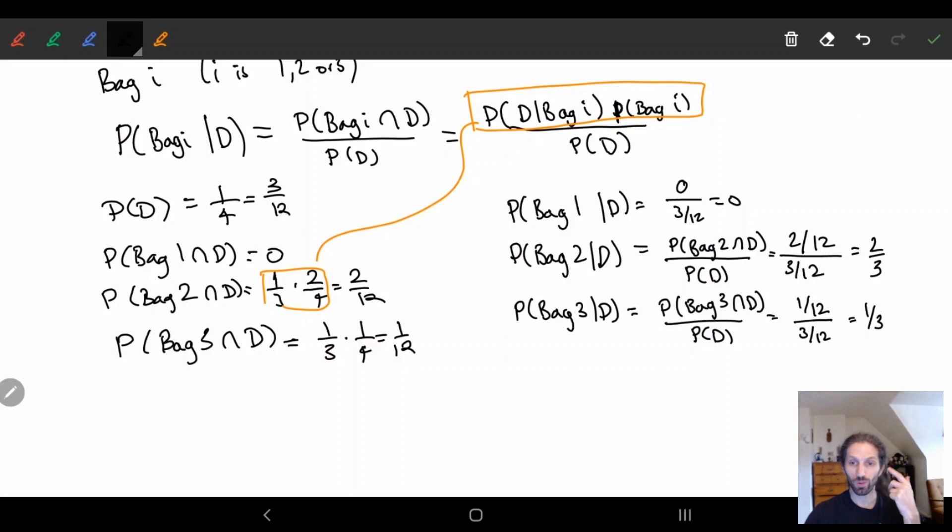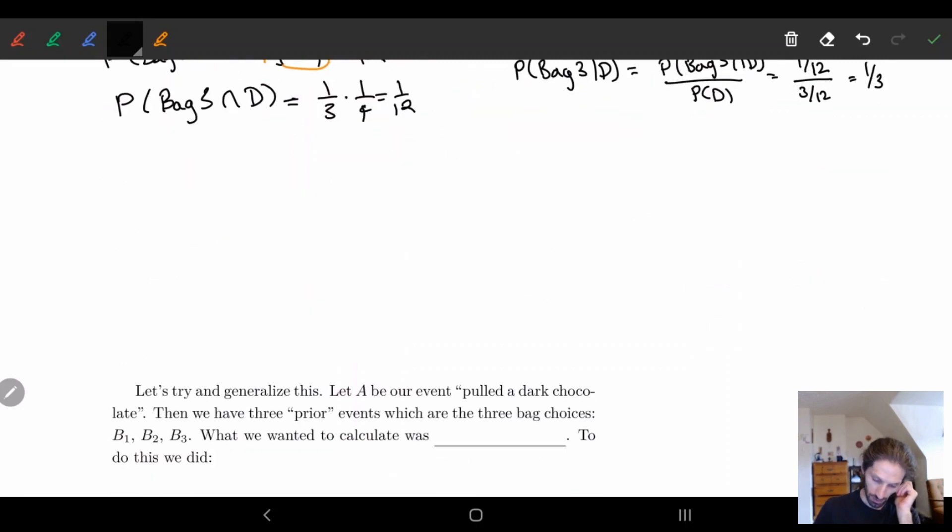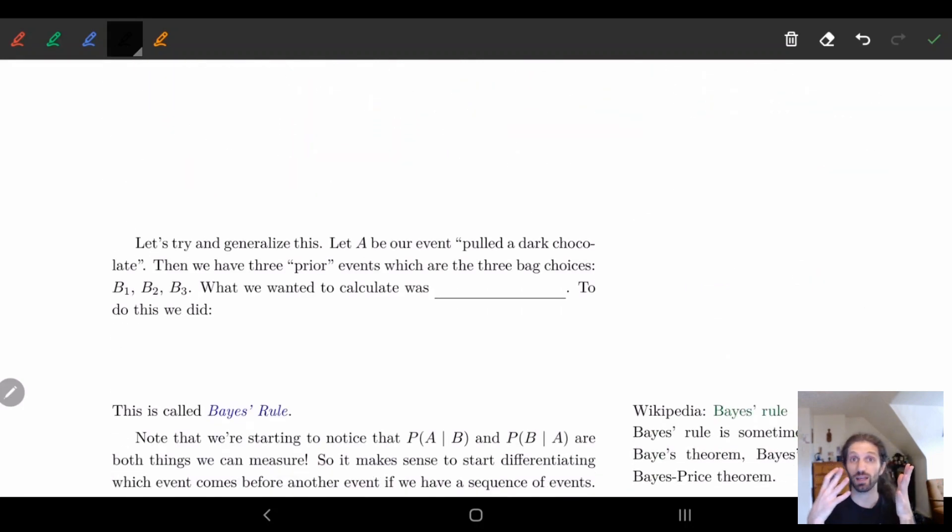The question then became, let's try to generalize this and do a similar thing from before where we had n events. What we said is what we wanted to calculate is if I take n B ones which are like prior events and I tried to calculate a prior event given a future event.